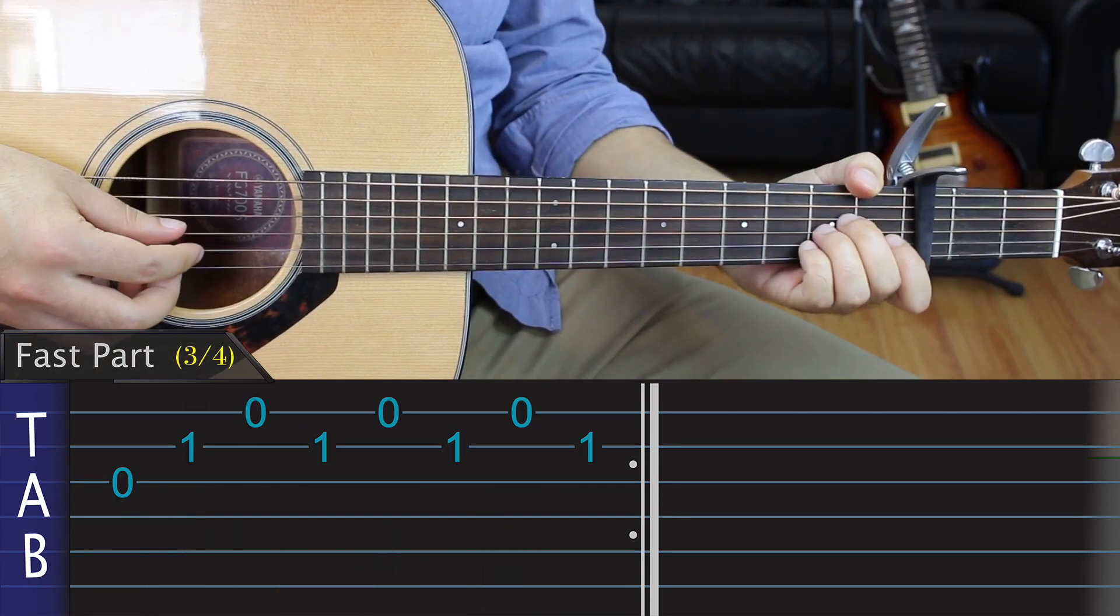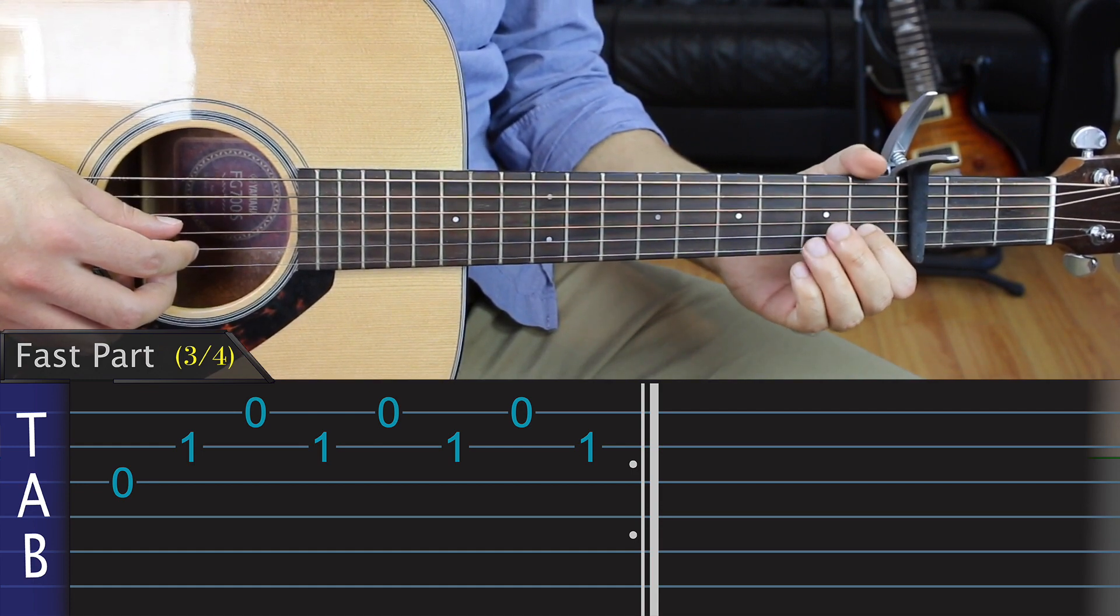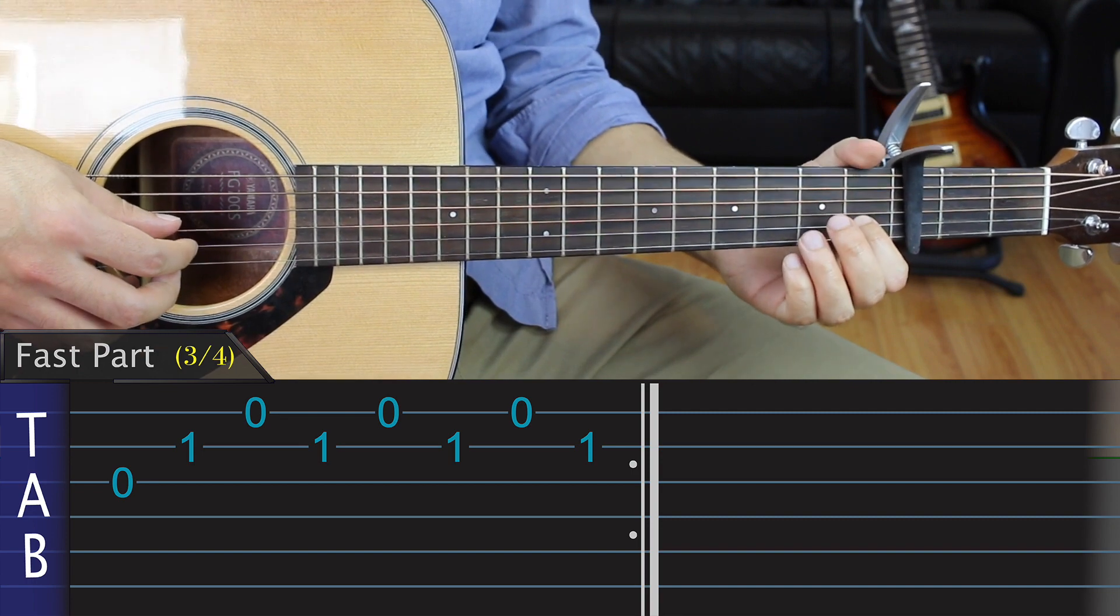The next step is to hold down the B string with our left index, and leave the other strings open. Here's what that sounds like when we apply the same picking pattern.